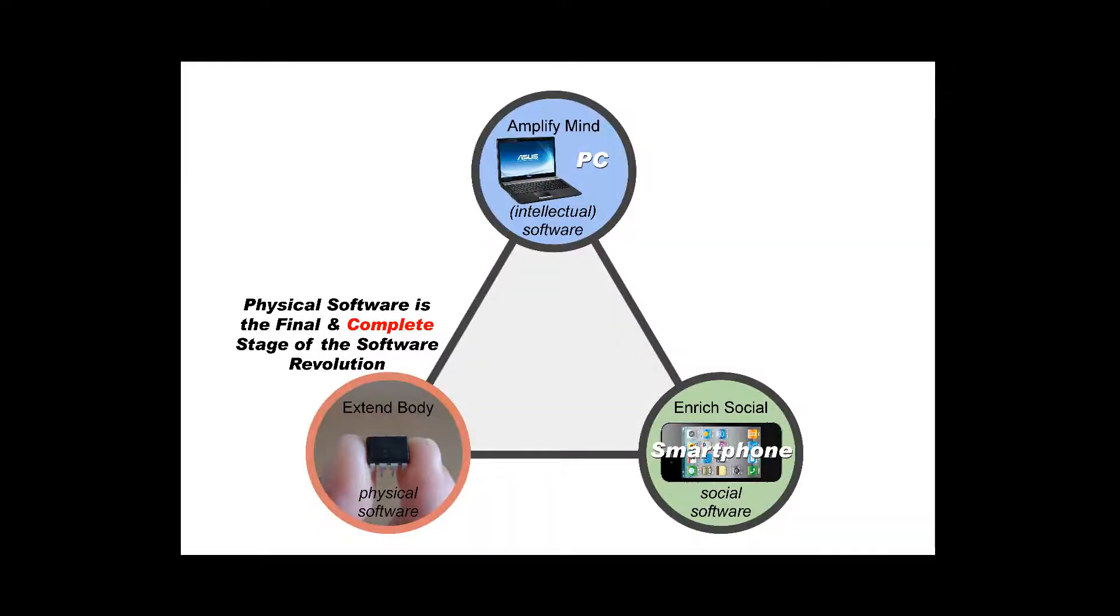The easiest way to explain physical software is to look at this diagram. At the top we have the traditional PC, at the right we have the smartphone, and at left in the red we have physical software.